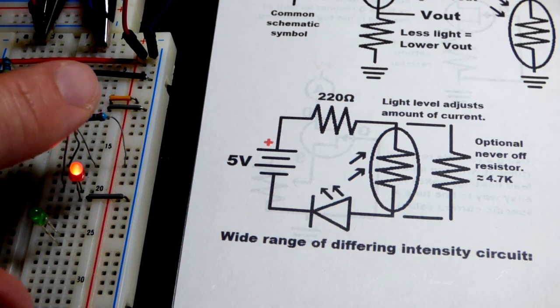But there we got the red LED. It is not as bright as the green LED, even though it actually has more current going through it. But there you can see that, again, we control the brightness with the light.